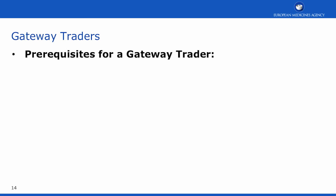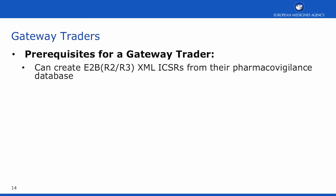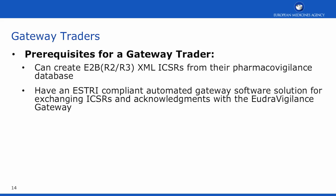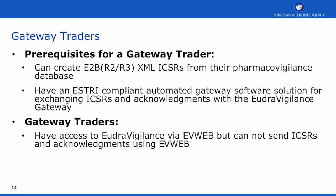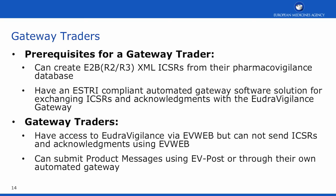The pre-requisites for a Gateway Trader are that they can create E2B R2 or R3 XML files from their own pharmacovigilance database. In addition, they must have an S3-compliant automated gateway software solution for exchanging ICSR and acknowledgement messages with the EudraVigilance gateway. Gateway Traders will have access to EudraVigilance via EVWEB but cannot use it to send ICSRs or acknowledgement messages using the EVWEB tool. Gateway Traders can also submit product messages using the EVPOST function or through their own automated gateway.